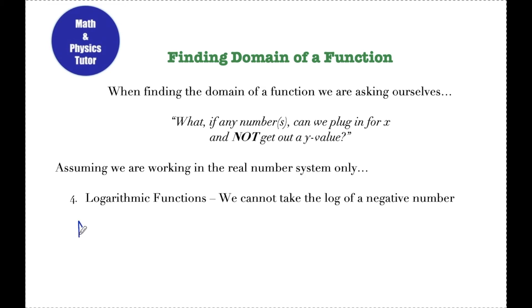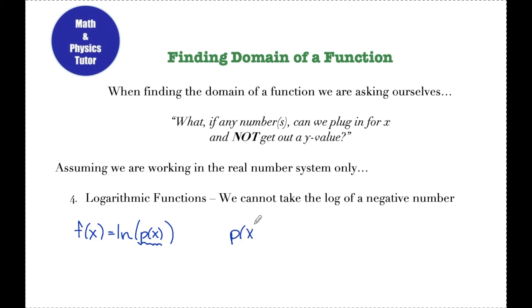The fourth case is a logarithmic function. Say f of x is defined as ln of some polynomial p of x. I know that the ln graph only has a domain of zero to infinity, not including zero. So I have to make sure that the polynomial is always strictly greater than zero — it must be greater than zero, not greater than or equal to zero. My domain will be restricted to when p of x is greater than zero.